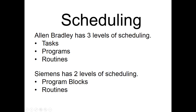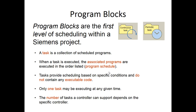When we talk about scheduling, Allen-Bradley has three levels: tasks, programs, and routines. Siemens has two levels: program blocks and routines. Basically we want to understand the difference between continuous tasks and periodic tasks. Some things are scanned continuously — the PLC just starts taking a look at the program block you've put in there, processes it, moves to the next one, and so on. These continuous tasks typically have pretty low priority.